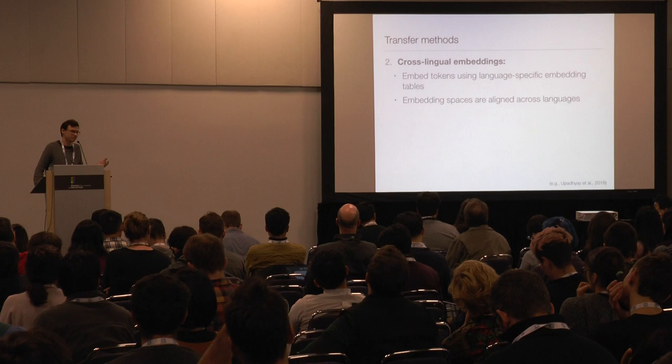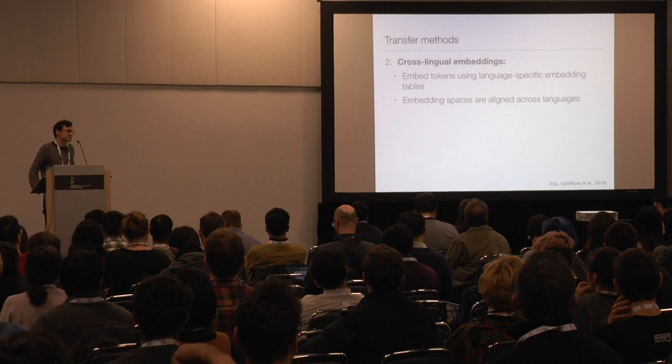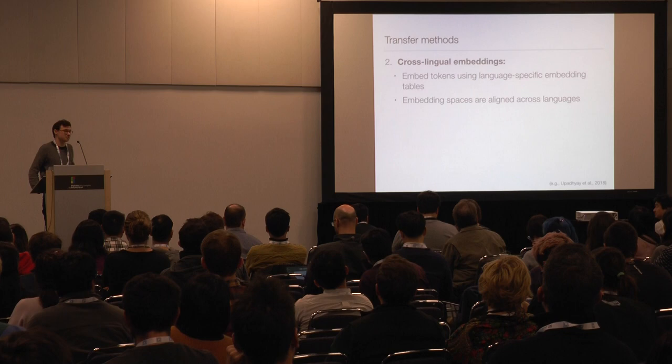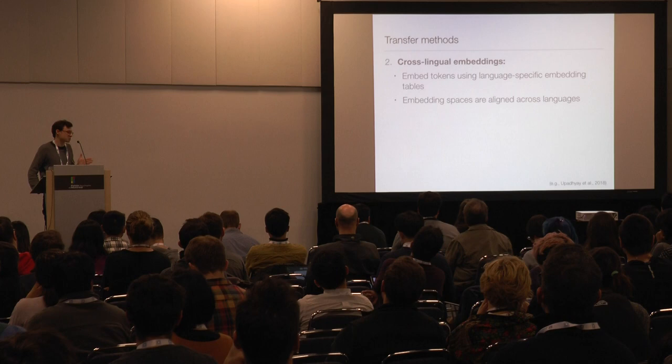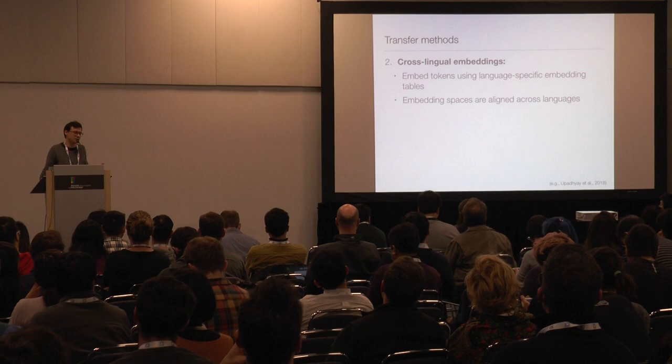The second method that has been proposed recently is to embed the utterance tokens using language-specific embedding matrices. Crucially, these embedding matrices have the property that words with similar meaning across languages have a similar position in vector space. You can then share all the other parameters of the model and jointly train on the high-resource and the low-resource language.